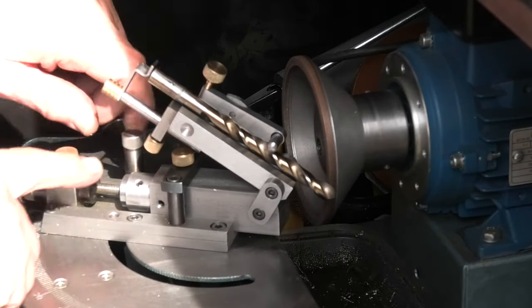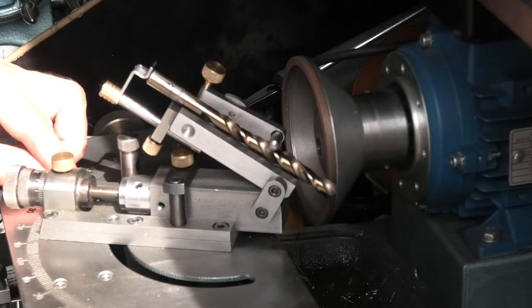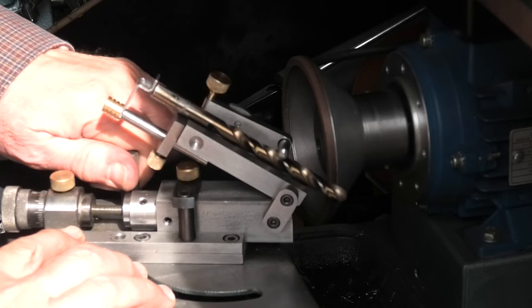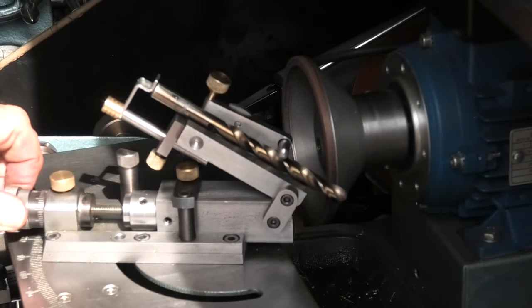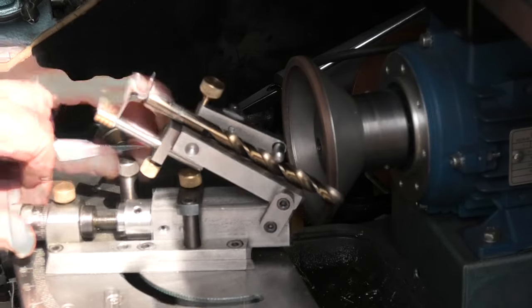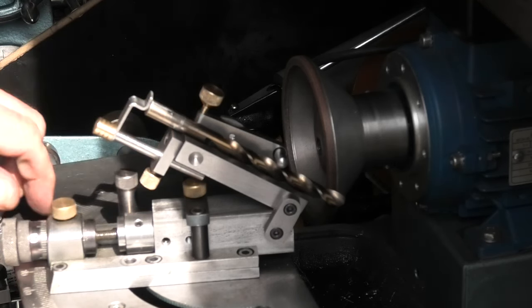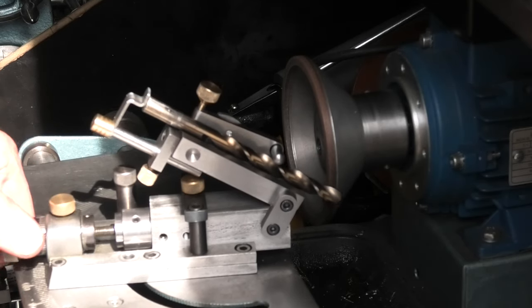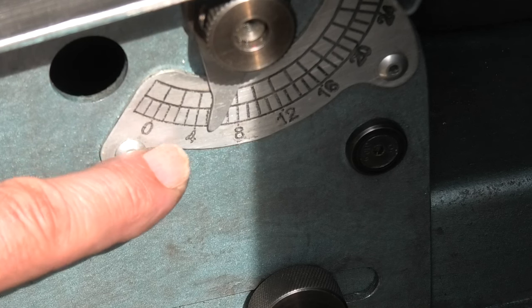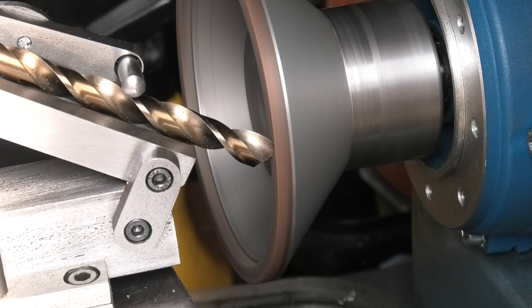So now what I need to do is alter this screw here. Slacken that off. Move this down to 10. Lock it up. Move the drill back. 10 degrees which is under the handle. Back the drill off. Adjust the angle of the table so that the wheel is parallel to the cutting edge. Feed the drill in.